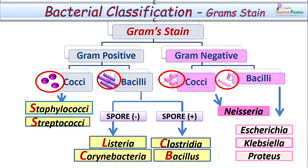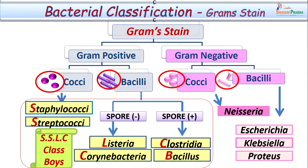To help remember the gram positive bacteria, here is a mnemonic: SSLC class boys. S for Staphylococcus, S for Streptococci, L for Listeria, C for Corynebacteria, C for Clostridia, and B for Bacillus. Hope this helps you.